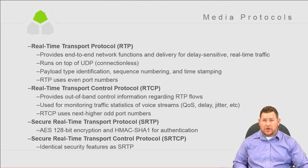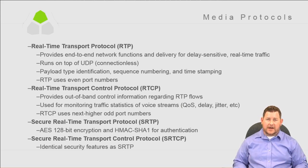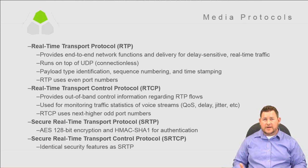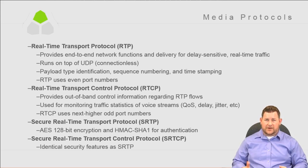Real-Time Transport Control Protocol, RTCP, works in conjunction with RTP. It provides out-of-band control information regarding RTP flows — quality of the voice stream, QoS, delay, and jitter. It uses the next higher port number, so if RTP uses UDP port 16384, RTCP would use 16385. It provides control information about the actual stream itself.